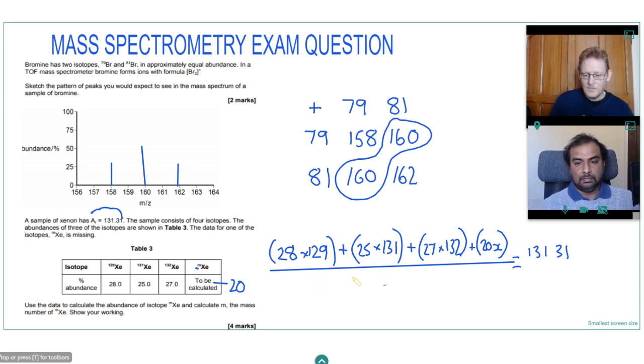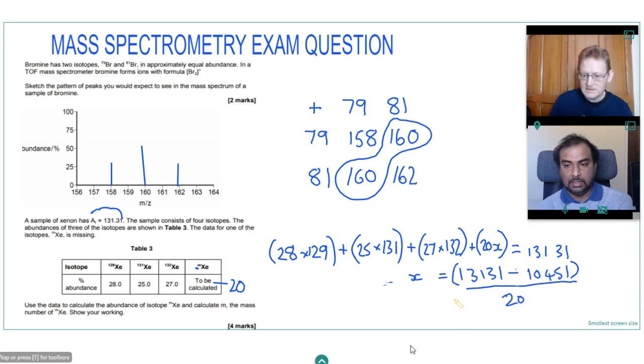And then if we work out everything apart from 20x. So we've got 28 times 129, add 25 times 131, add 27 times 132. That gives us 10,451.